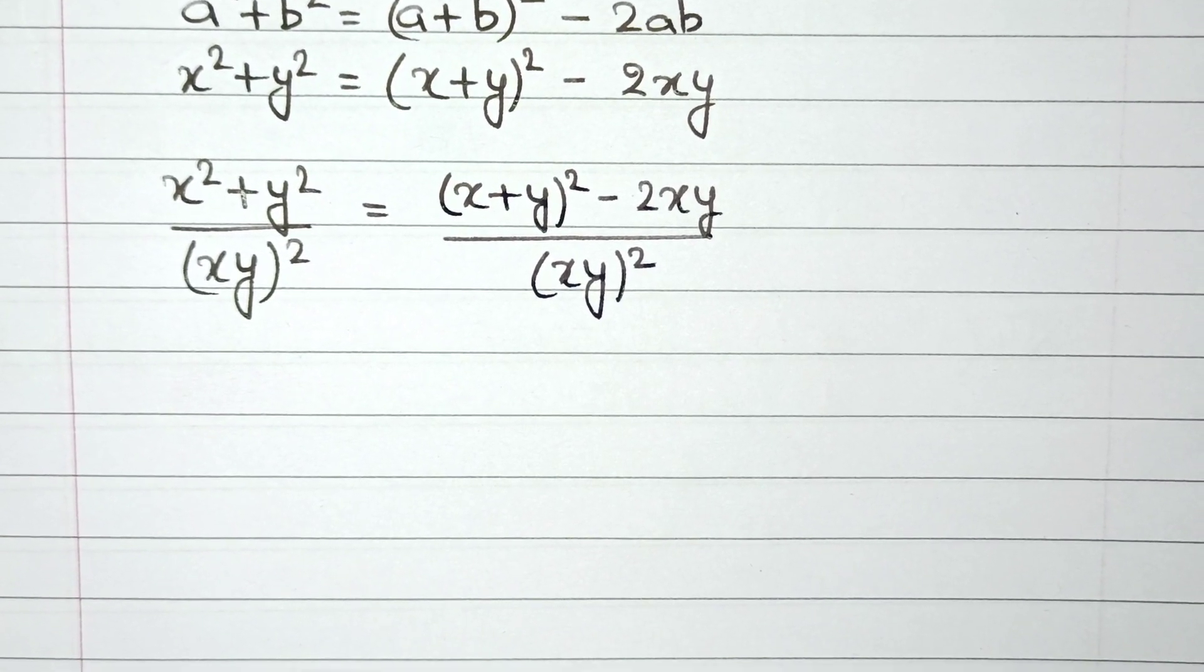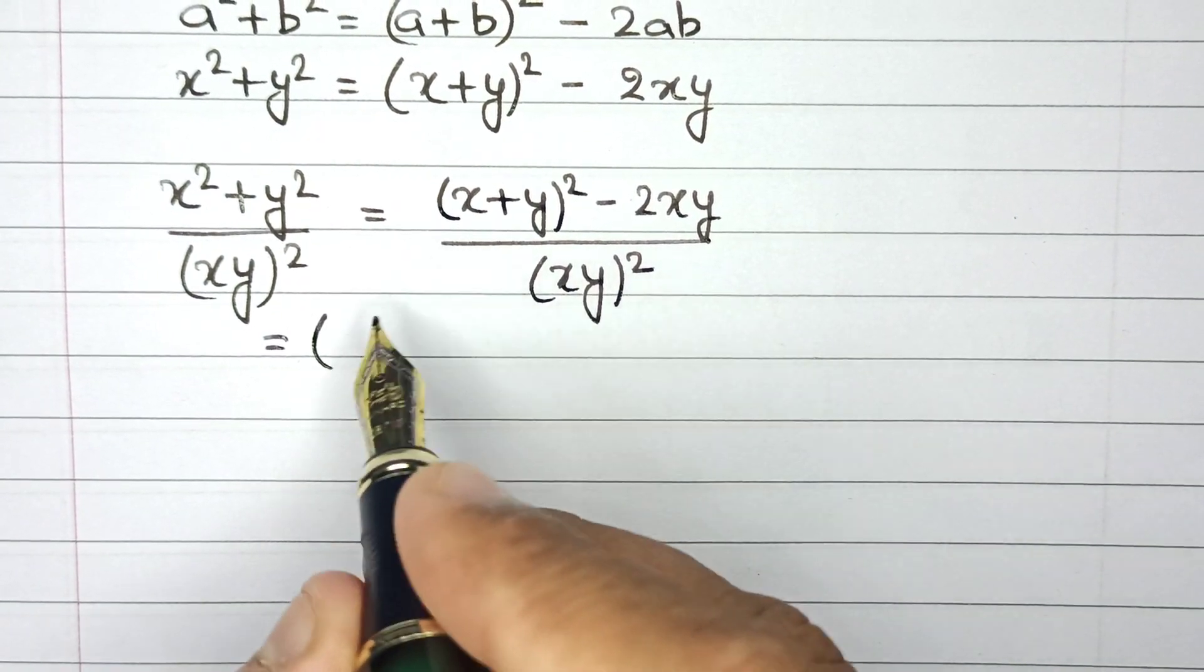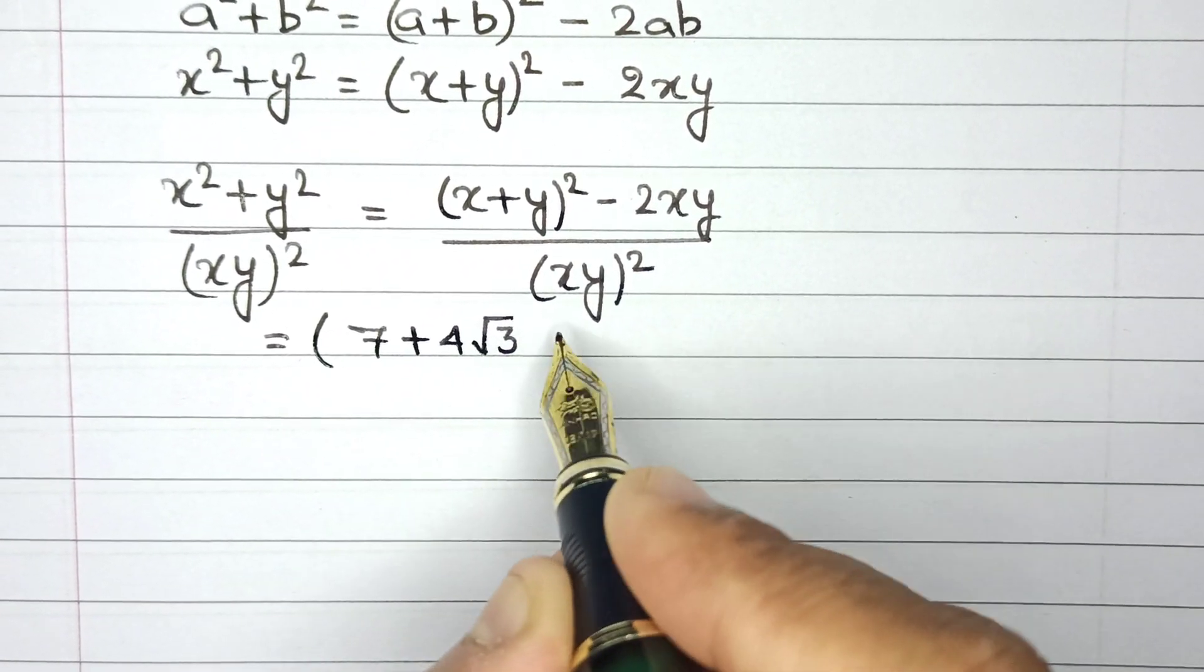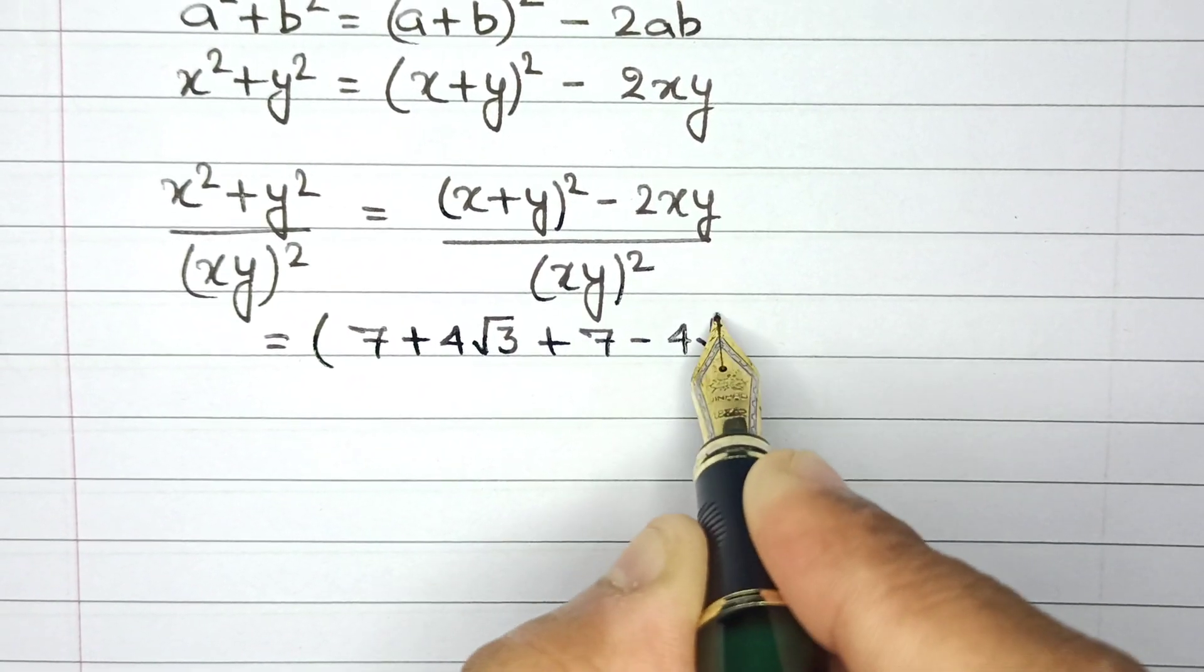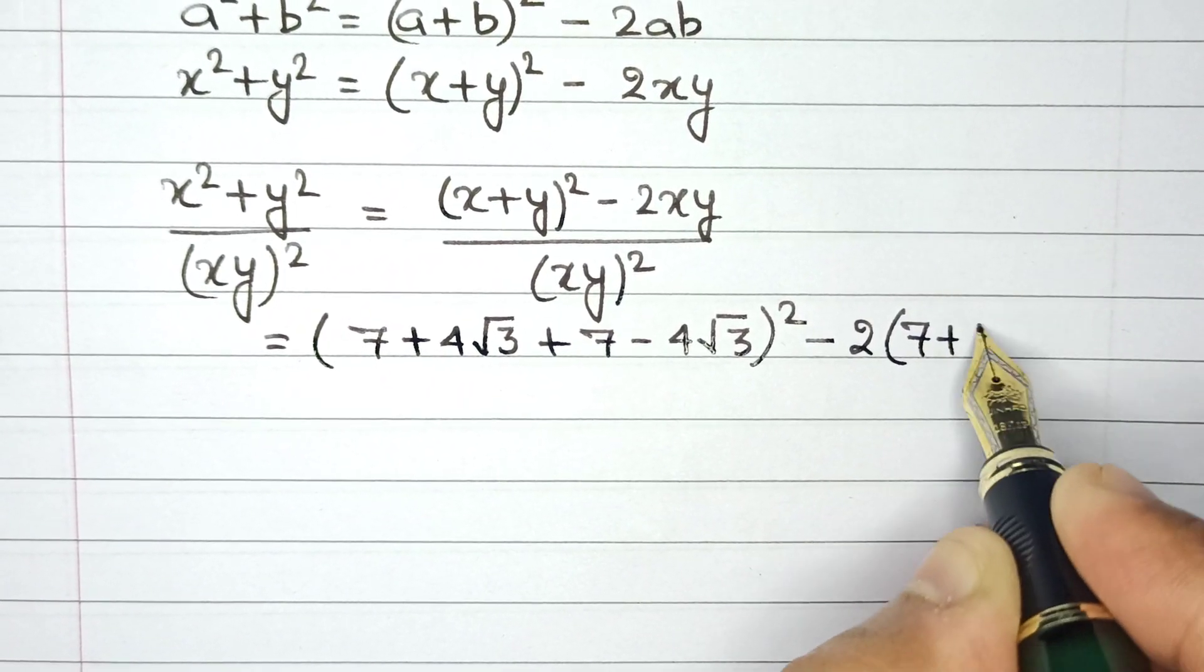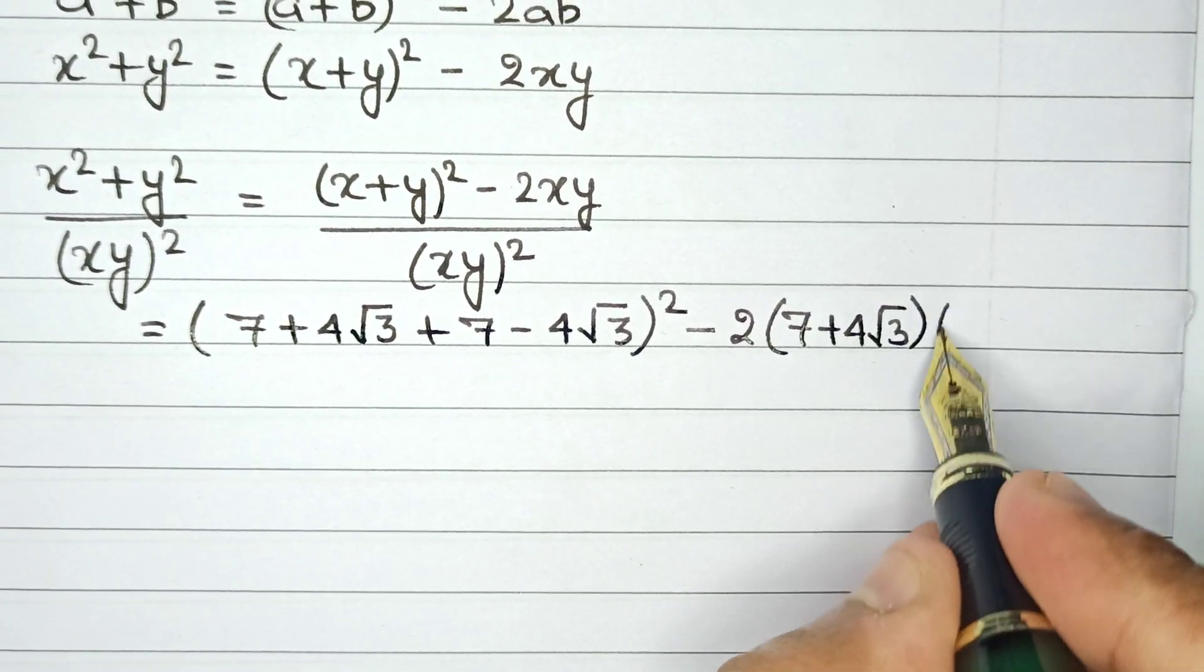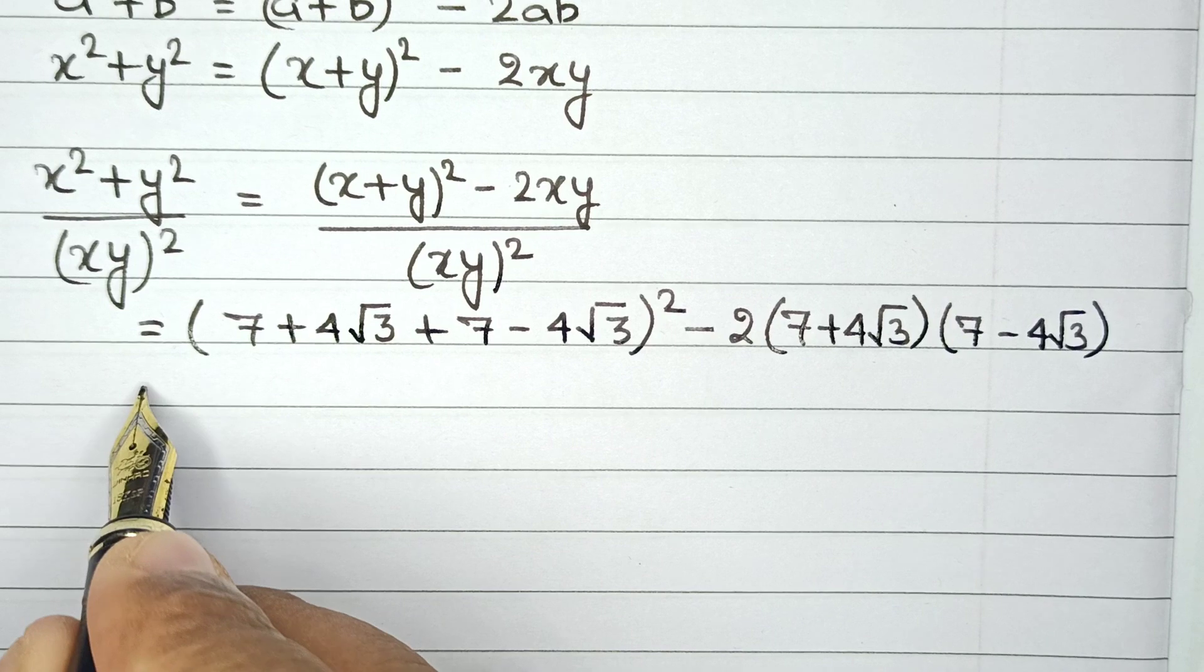Now is the precise moment when we substitute the values. So the value of x is 7 plus 4 square root of 3 plus 7 minus 4 root of 3 whole square minus 2 times x multiplied by y. So that is 7 plus 4 square root 3 multiplied by 7 minus 4 square root of 3. Let's solve it.